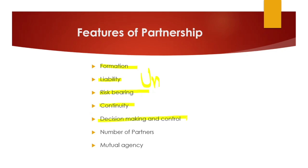Next is decision making and control — with multiple partners there is good expertise available, and decision making and control is shared among all of them. Regarding number of partners, the minimum number required to form a partnership business is two, and the maximum is up to 50 at present.